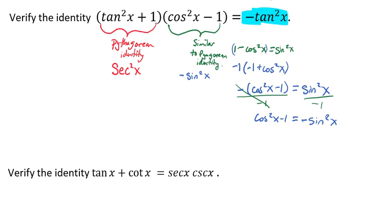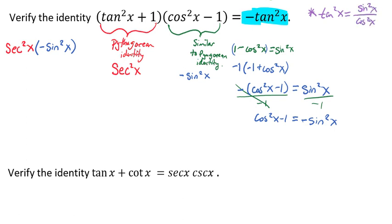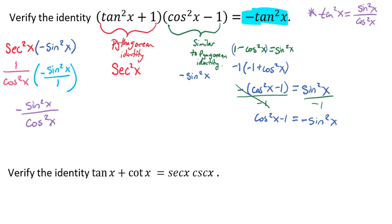Now we can plug that in. What we're really dealing with is the secant squared of x times a negative sine squared of x. Next, we're going to take this because we're trying to get it to be a tangent. Tangent is written in terms of sines and cosines — tangent squared of x equals sine squared of x over cosine squared of x. So we rewrite secant squared as 1 over cosine squared of x, and negative sine squared of x as negative sine squared of x over 1. Multiplying these together gives us negative sine squared of x over cosine squared of x, which gives us negative tangent squared of x — which is what we were looking for.